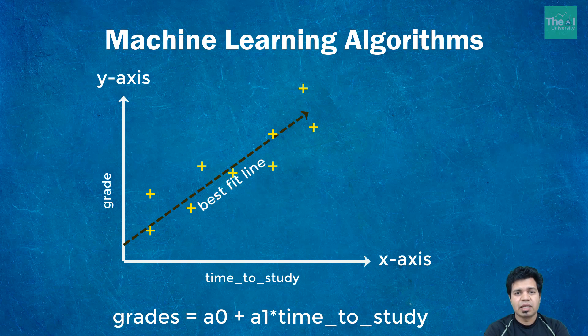Now a0 is constant here which is a point where this best fit line crosses the vertical axis or y-axis. In other words, it is a constant value that determines the value of y when x equals to zero.